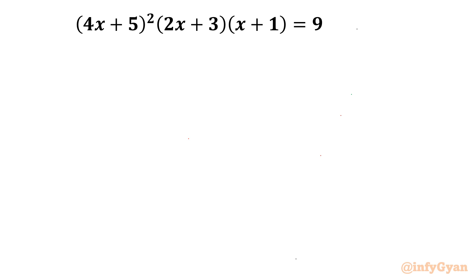Welcome back to Infigian friends. In this video we are going to take up one very interesting algebraic challenging equation from chaotic equations. The equation is (4x+5)² × (2x+3) × (x+1) = 9. We have to find out the real values of x.